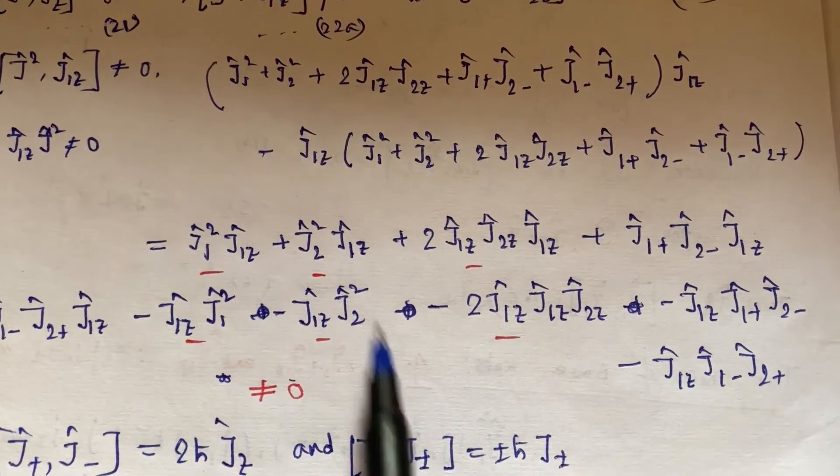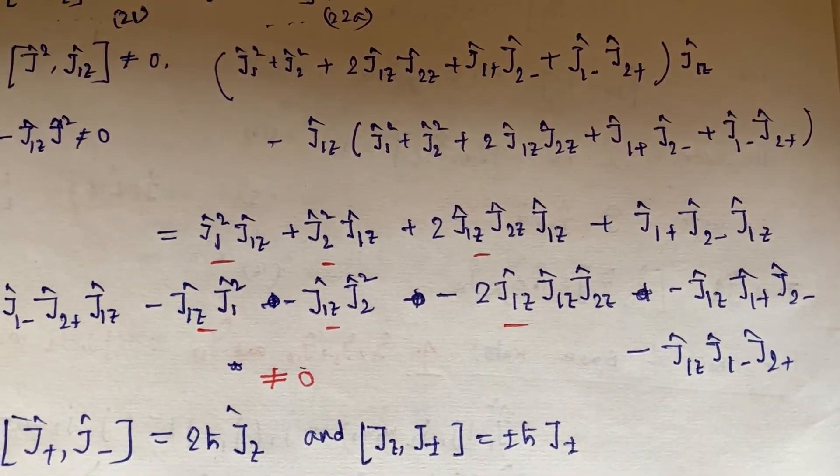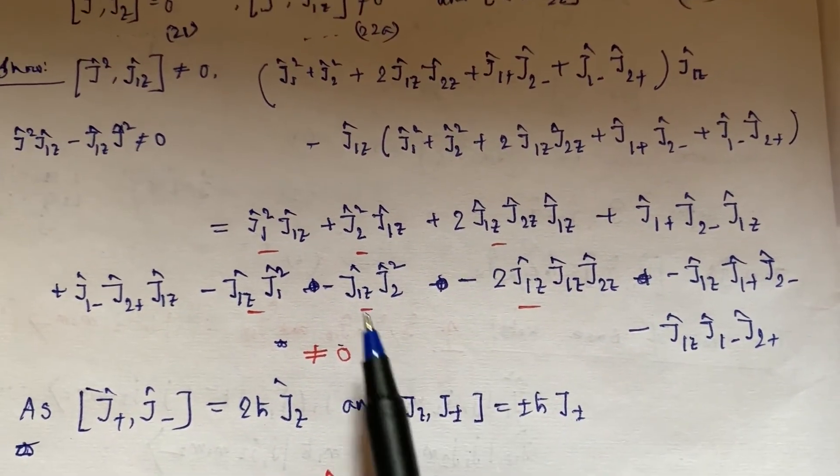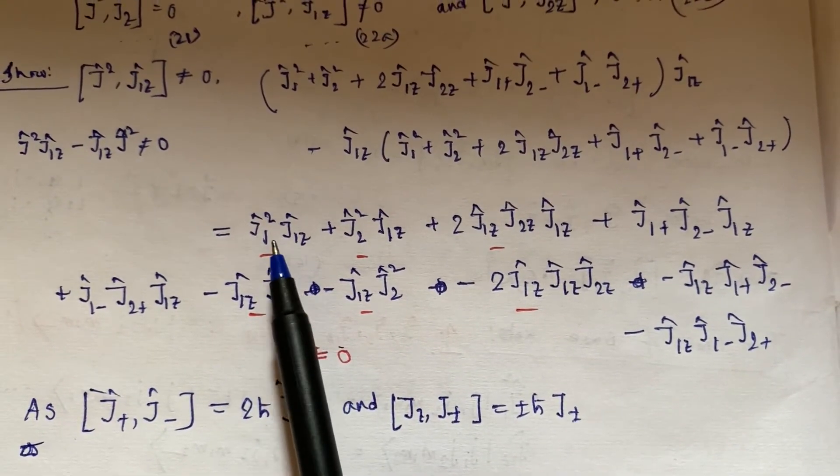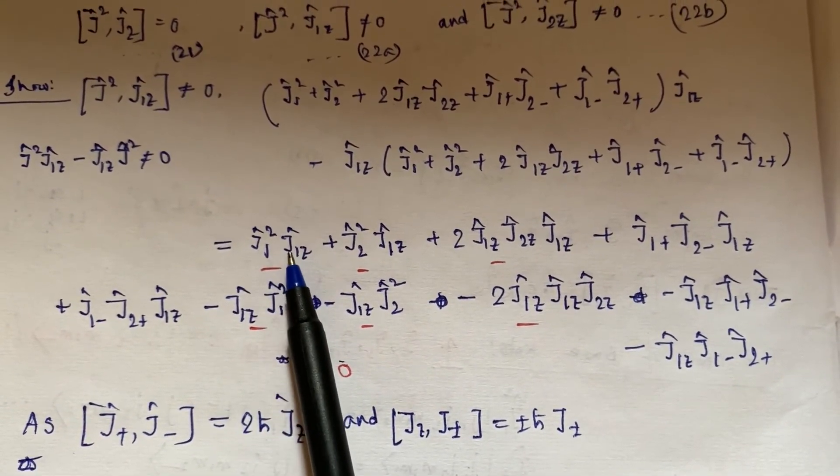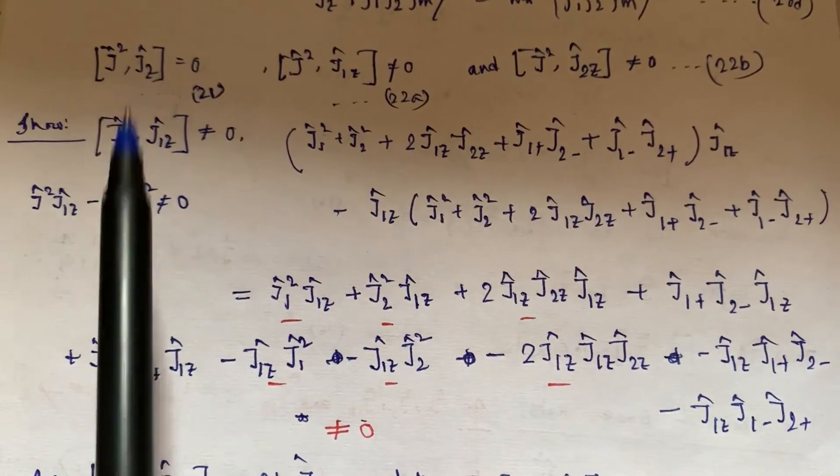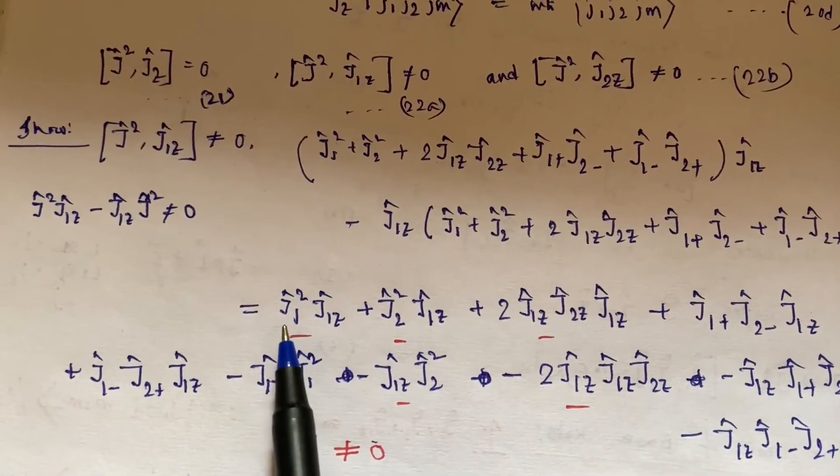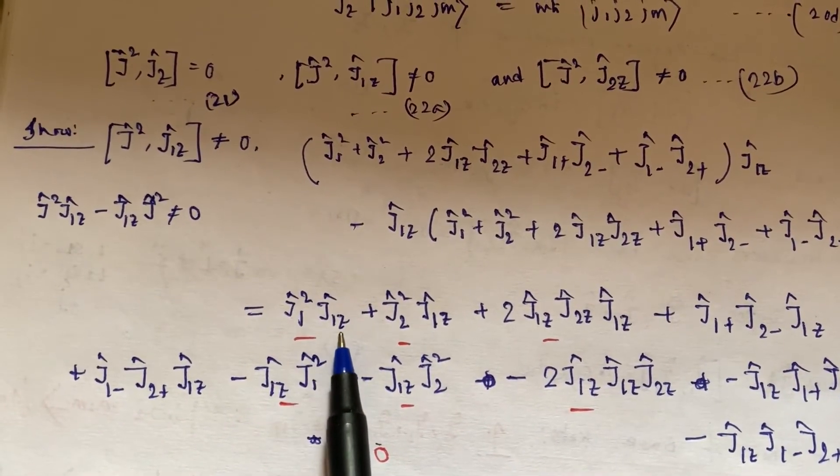And then minus J₁z operating from front here, J₁z operating from right side here, J₁z operating from left side. Now I am just multiplying—these are matrix multiplications actually.